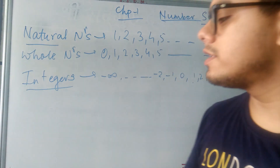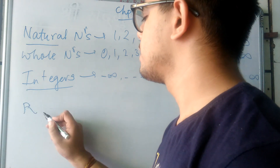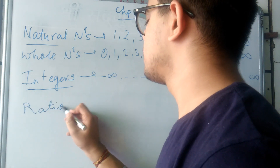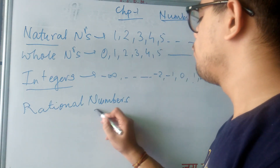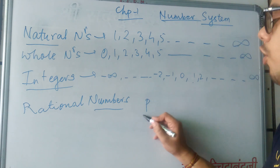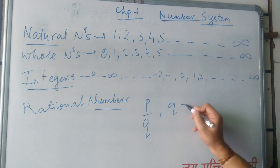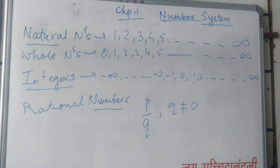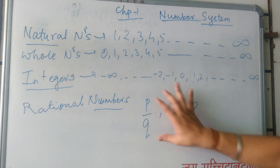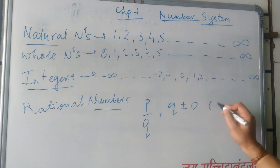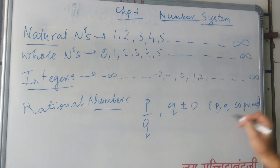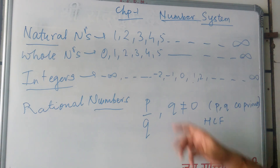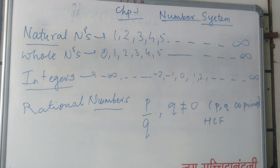Now our chapter deals with rational numbers. What are rational numbers? Any number which can be represented in the form of P upon Q, where Q does not equal to 0. Here P upon Q means it can be represented in the form of a fraction. And P and Q here are co-primes.